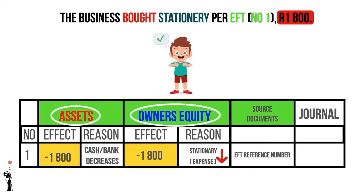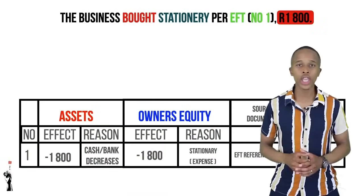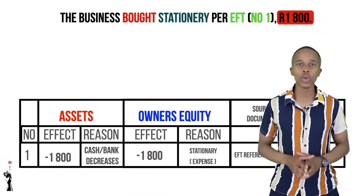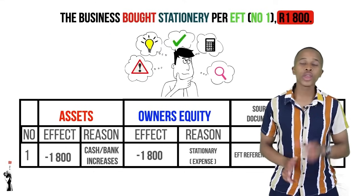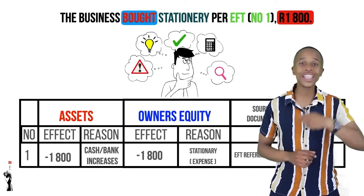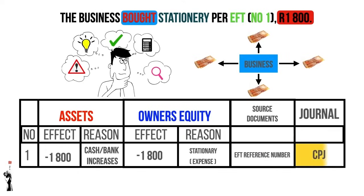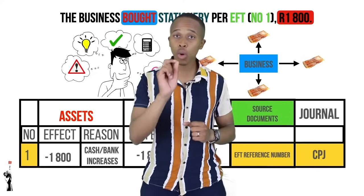The source document is an electronic fund transfer or EFT, because the business did the transaction via EFT. The reference number one will also be used in the accounting equation. The journal is the CPJ — the cash payments journal — because the business paid money. To summarize: 'bought' means money leaving the business so we use the CPJ; EFT is the method of payment; and the reference number goes in the source document on the accounting equation.